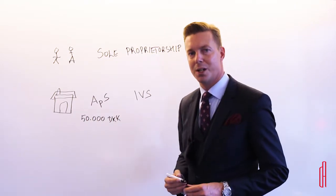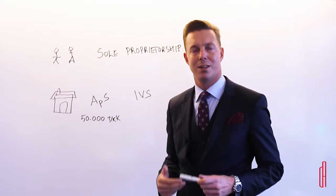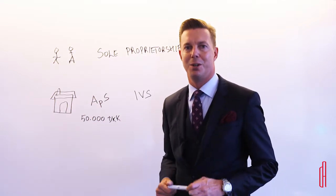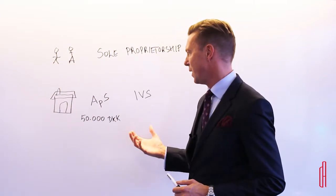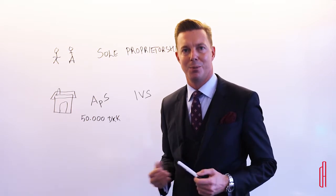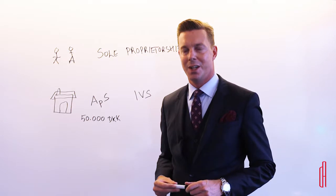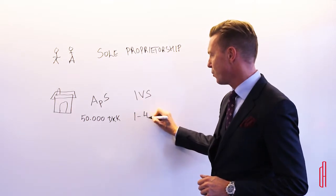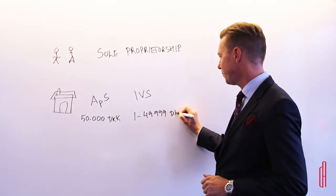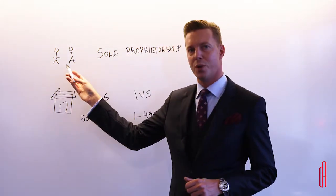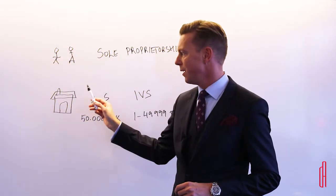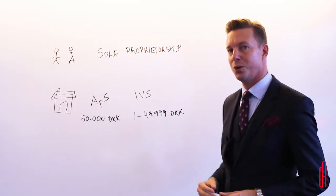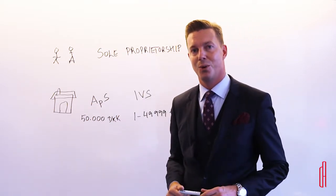An IVS is a newer form of limited liability company. In reality there's not a big difference in terms of goodwill versus the APS — it is a newer structure but very seldomly will you hear anyone comment on it. The IVS is designed for entrepreneurs; if you translate it directly, it's essentially a limited liability company for an entrepreneur. You can establish this company with anywhere between one kroner and 49,999 kroner.